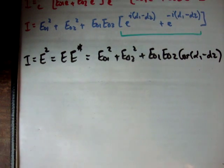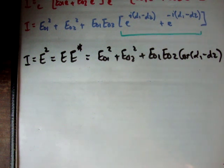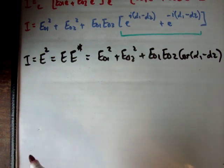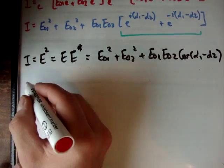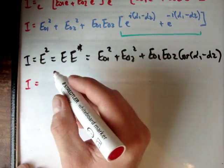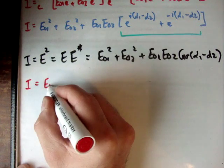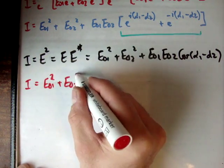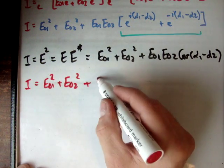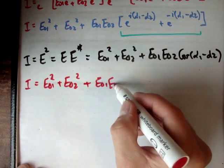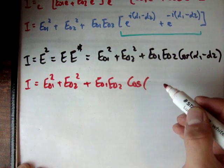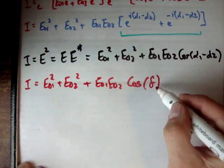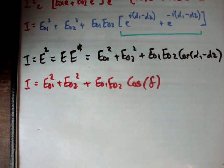So as a result, we can say the irradiance is equal to E01 squared plus E02 squared plus their product E01·E02, times the cosine of delta. That's very important.